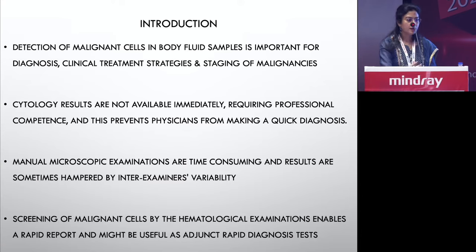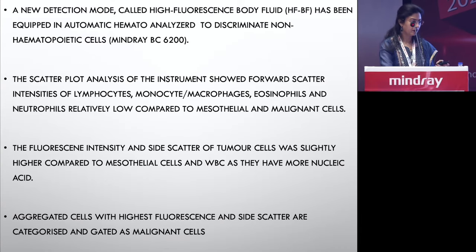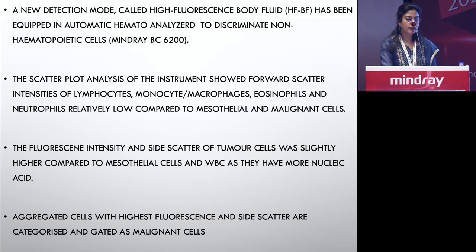This is where evaluation by hematology analyzers can cut down the gap between cytology and hematology. Screening by hematology machines is a very rapid method and a good adjunct to the gold standard cytopathology. Most new five-part and seven-part analyzers have a body fluid analyzer mode using flow cytometry — the high fluorescence body fluid mode — which is useful to discriminate between malignant and non-malignant cells.